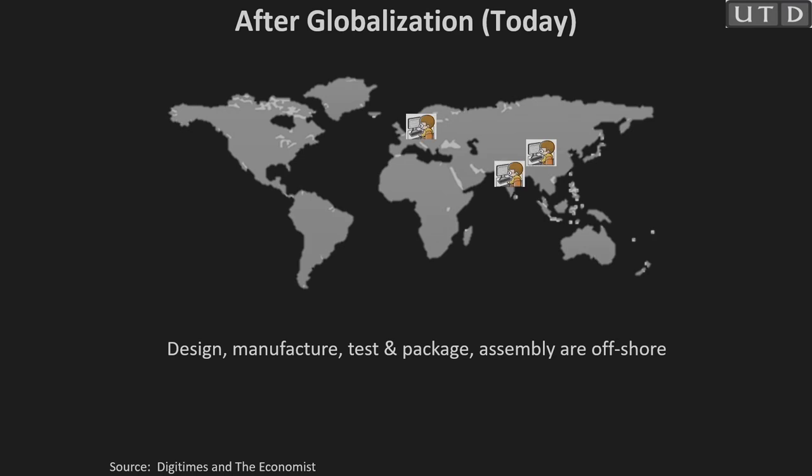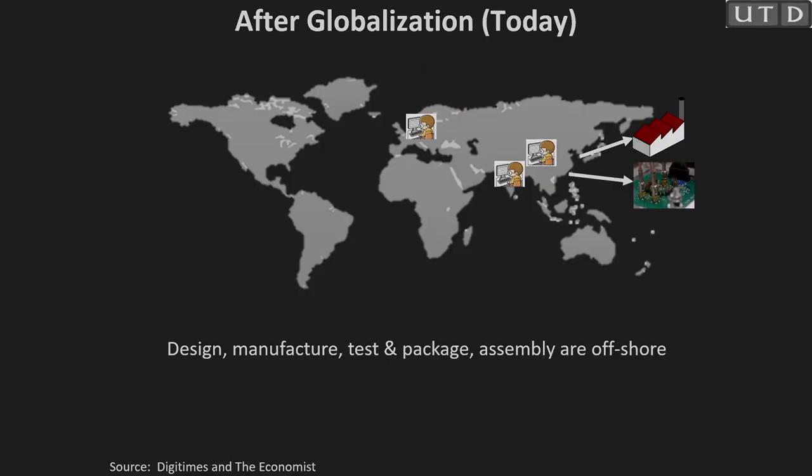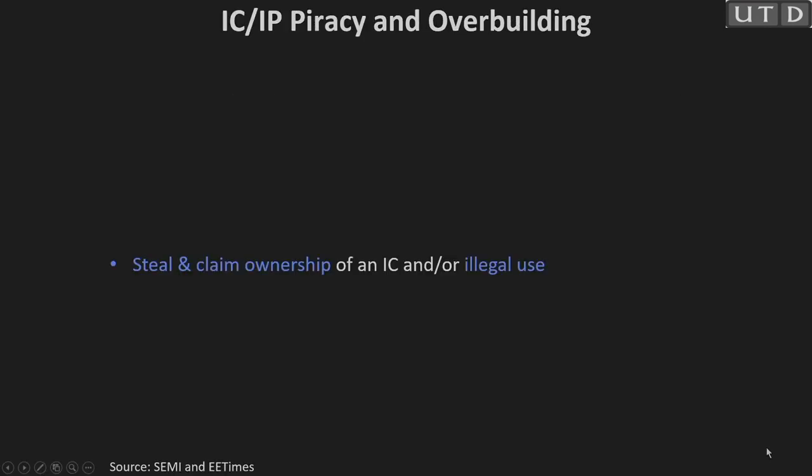As we discussed in the previous class, because of the globalization of the IC design flow, we have to give our IP to somebody at the foundry where the actual fabrication is going to happen. The foundry can be malicious, or there will be some malicious employee in the foundry who can steal the IP, reverse engineer it, generate a netlist, and as a result you can have IP piracy and overbuilding.